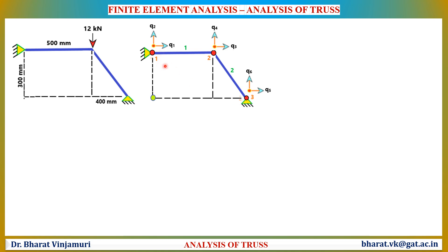The node numbering starts from node 1, node 2, and node 3. The entire structure has six degrees of freedom: Q1 and Q2 at node 1, Q3 and Q4 at node 2, and Q5 and Q6 at node 3. Care must be taken that the displacement in the x-axis is always mentioned first, followed by the displacement in the y-axis. So Q3 comes first as displacement in x-axis and Q4 follows.